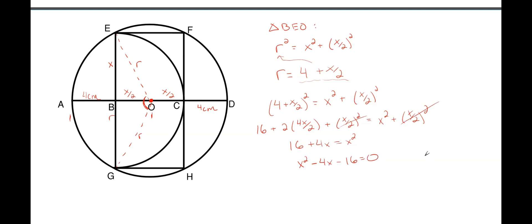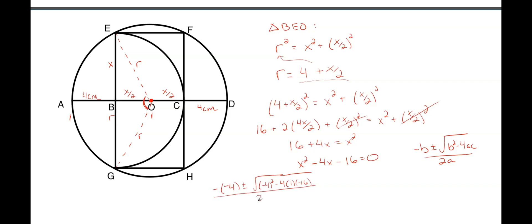Using the quadratic formula: x = (−b ± √(b² − 4ac)) / 2a, we plug in our values: (4 ± √(16 + 64)) / 2, which simplifies to (4 ± 4√5) / 2, giving us 2 ± 2√5. We can only use the positive version since a negative distance is impossible. So X = 2 + 2√5 centimeters.